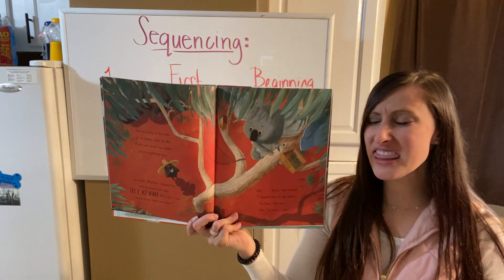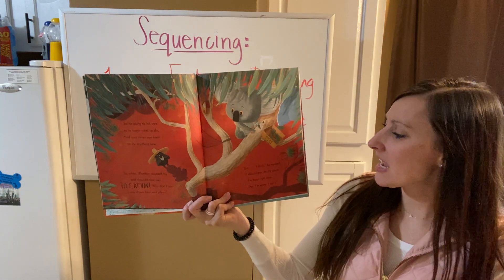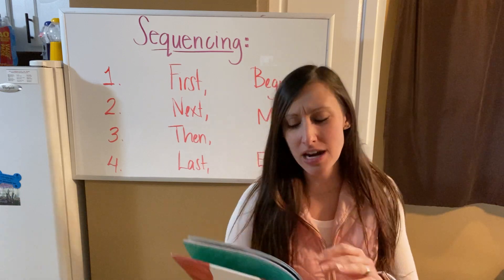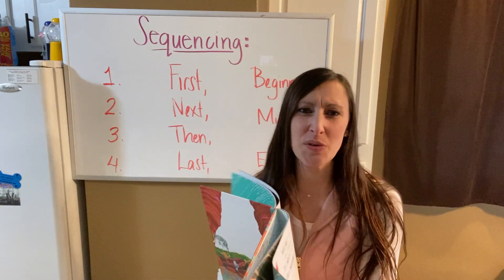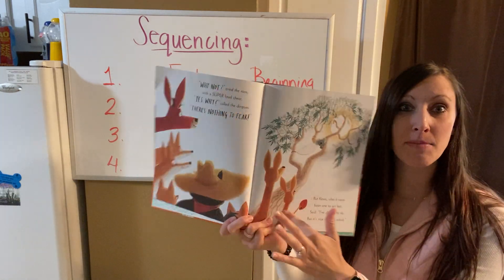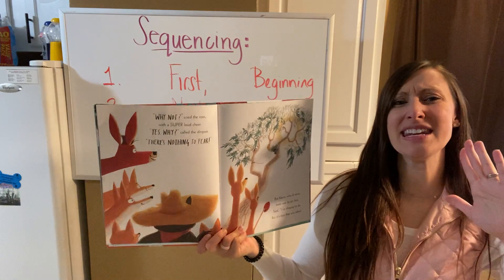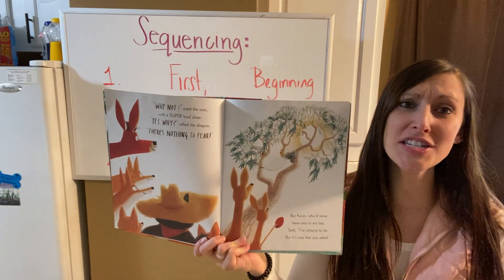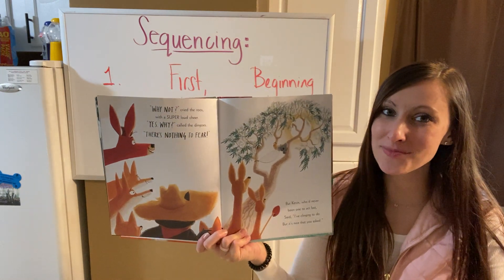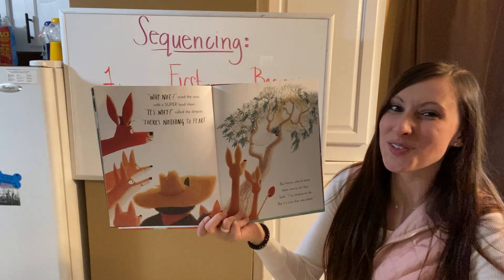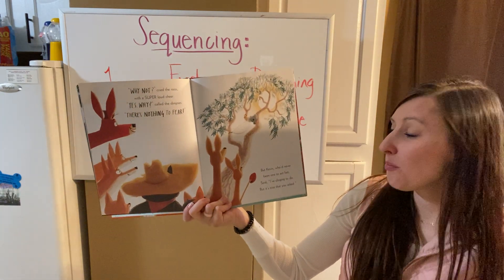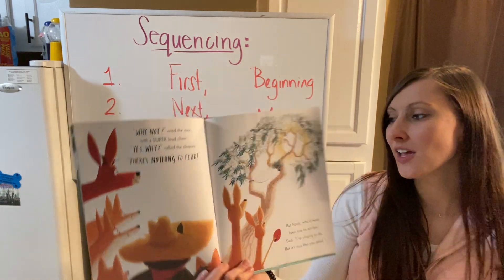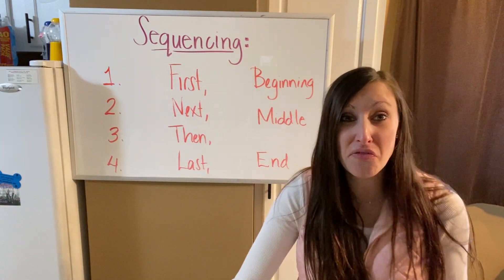Kevin replied, 'I think I should stay on my plant. I'm busy right now — no, I'm sorry, I can't.' So his Wombat friend says, 'Hey Kevin, come down here and play,' and he's like, yeah, I'm not going to do that. He's got a bunch of friends down there now. 'Why not?' cried the roos with a super loud cheer. 'Yes, why?' called the dingoes. 'There's nothing to fear.' But Kevin, who'd never been one to act fast, said, 'I've climbing to do, but it's nice that you asked.' He's saying, yeah, I've got stuff to do, but thank you for asking anyway.